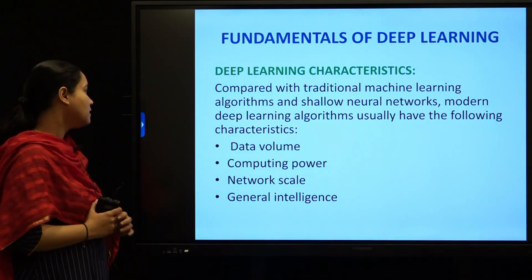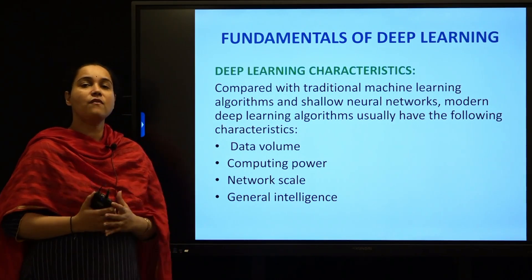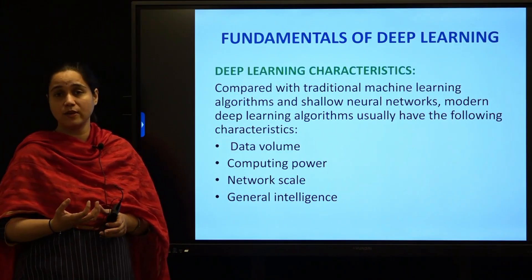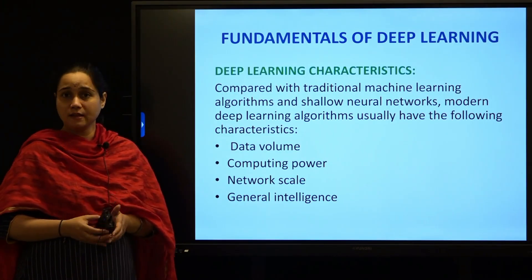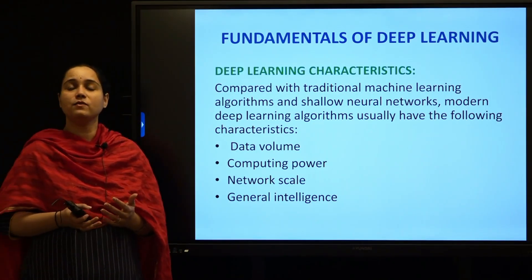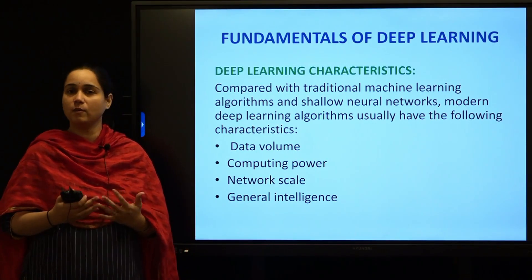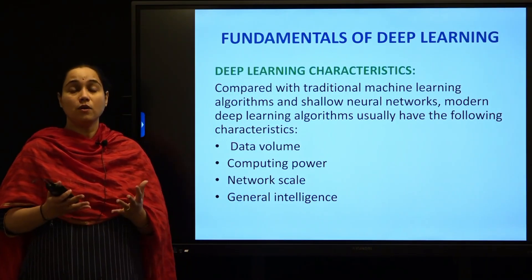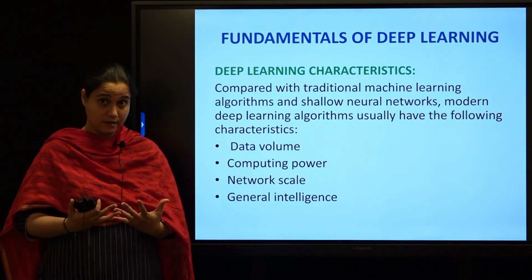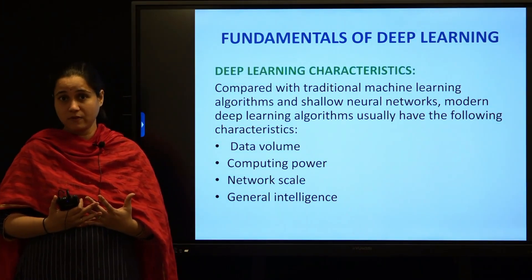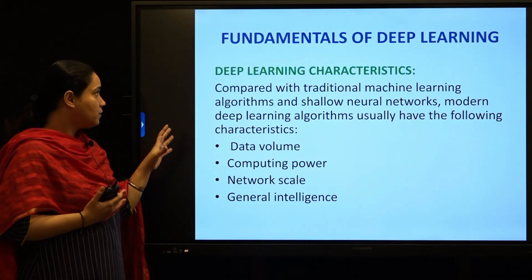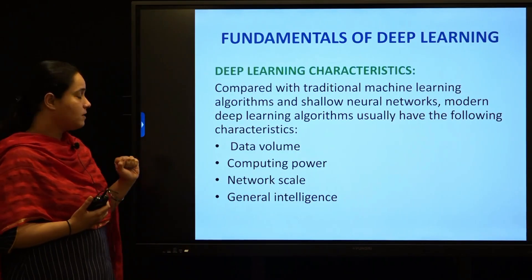When you have a larger dataset that is more complex in nature and the training size is very high, it is not suitable to use a machine learning algorithm — it won't give enough accuracy — and if you use a shallow neural network, the model will be overfitted. To work with datasets that are very high in size with a lot of training data, it is better to go for deep neural networks using deep learning algorithms when your data volume is very high.